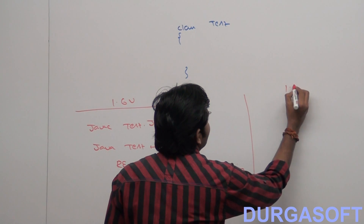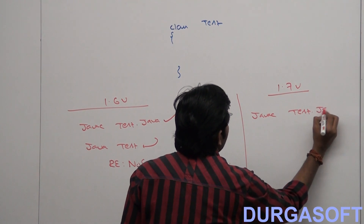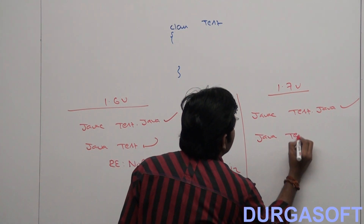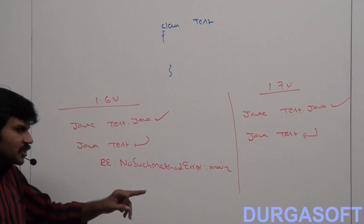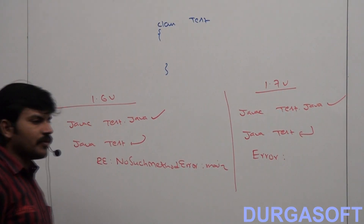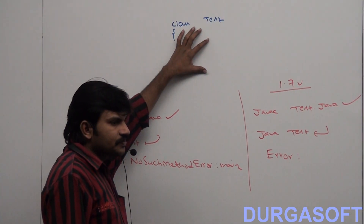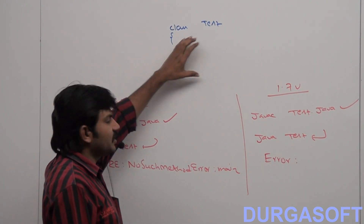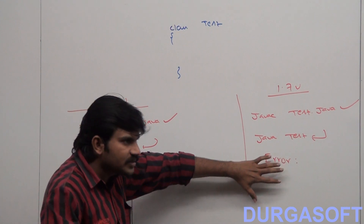But in the 1.7 version onwards, if you compile javac Test.java, the code compiles fine — no problem at all. But when you run Java Test, instead of NoSuchMethodError, we will get more meaningful error information saying: 'Main method not found in class Test. Please define main method as public static void main(String[] args).'